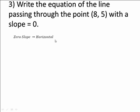Zero slope gives you a horizontal line, and any horizontal line can be written in the form y equals b, where b is the y-intercept, or b is the y-value of any point on the line. So the equation of this line is just y equals 5.